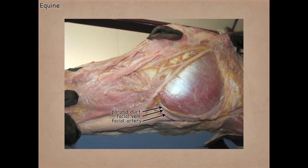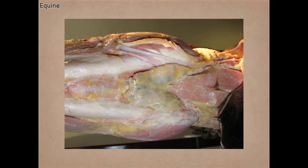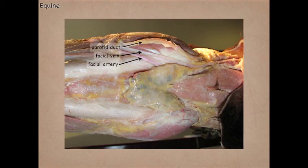Here we can see, ventral to the mandible, the mandibular lymph node. In a more ventral view, we see again the facial artery, facial vein, and the parotid duct reflected a little bit, showing the mandibular lymph nodes sitting between the bodies of the mandible.